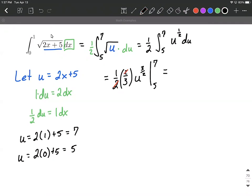Basically, we would get two six, or that's equivalent to one third, u to the three halves evaluated from five to seven.